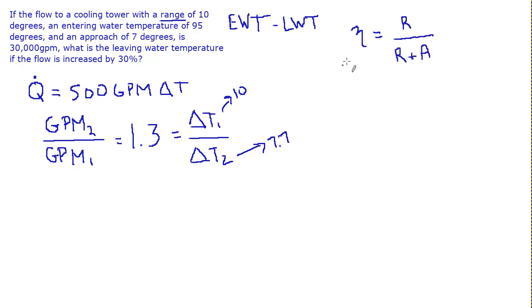The efficiency of a cooling tower is the range divided by the range plus the approach. And now let's separately remind ourselves what those are. Range is entering water temperature minus leaving water temperature.